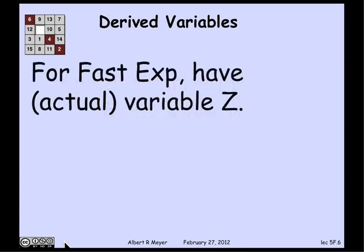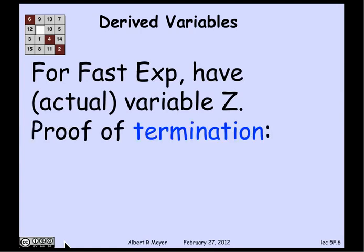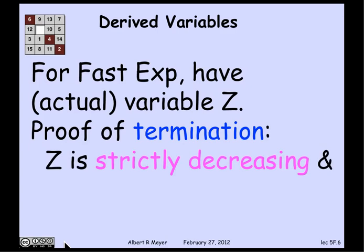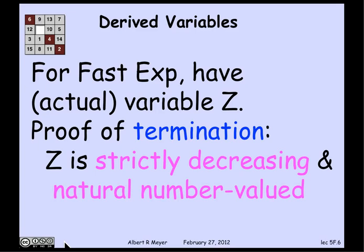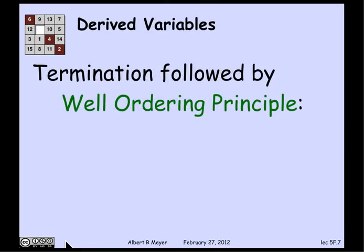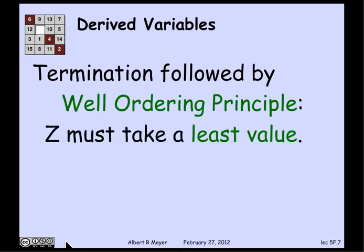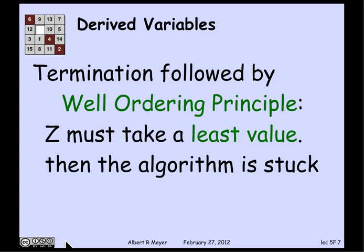In the case of fast exponentiation, we looked at the variable z, which was part of the invariant and a crucial part of the program. What we noticed about z was that it was a strictly decreasing and natural number valued variable — in fact, it halved at each step, with non-negative integer values strictly decreasing at every step. This implies, by the well-ordering principle, that it will take a minimum value, and once z has reached its minimum, if the machine took another step it would get smaller — meaning the algorithm has to terminate.